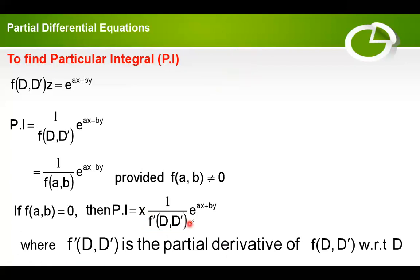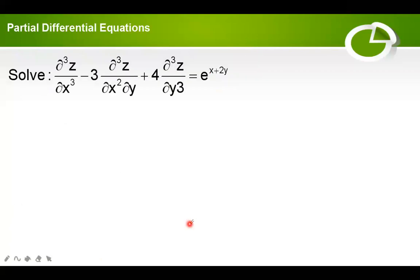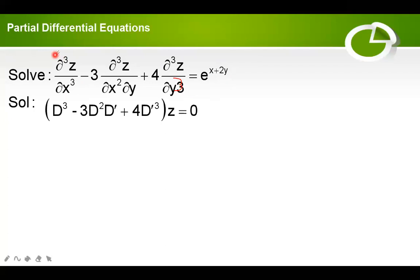Now we will solve one problem: ∂³z/∂x³ − 3∂³z/∂x²∂y + 4∂³z/∂y³ = e raised to x plus 2y. First of all, we have to convert into operator form. We replace ∂/∂x with capital D and ∂/∂y with D dash, giving D³ − 3D²D' + 4D'³ applied to z.